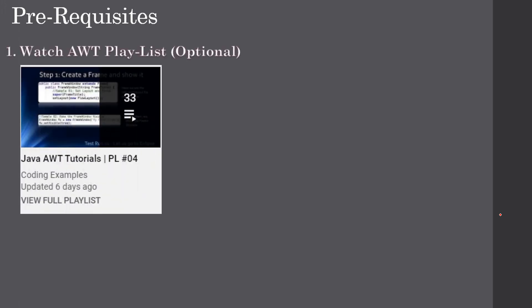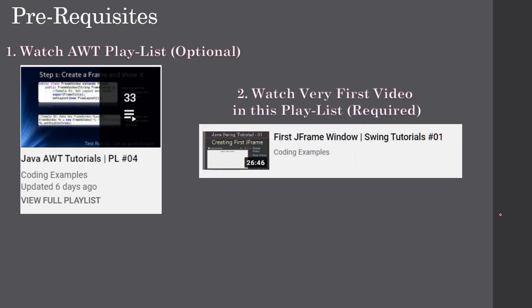The prerequisite AWT playlist is optional, but if you learn it, it will give you good hands-on experience and make your life easy when you are learning Java Swing. In this playlist you are learning Java Swing, and the very first video in this playlist is mandatory, since we use that JFrame to create all other examples. In each video we will not reiterate how to create a JFrame, so if you want to know how to create one, you can watch that first video.